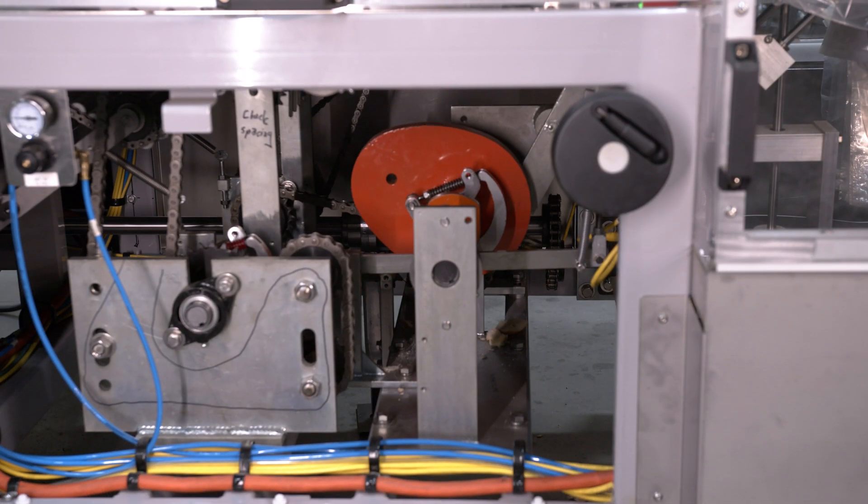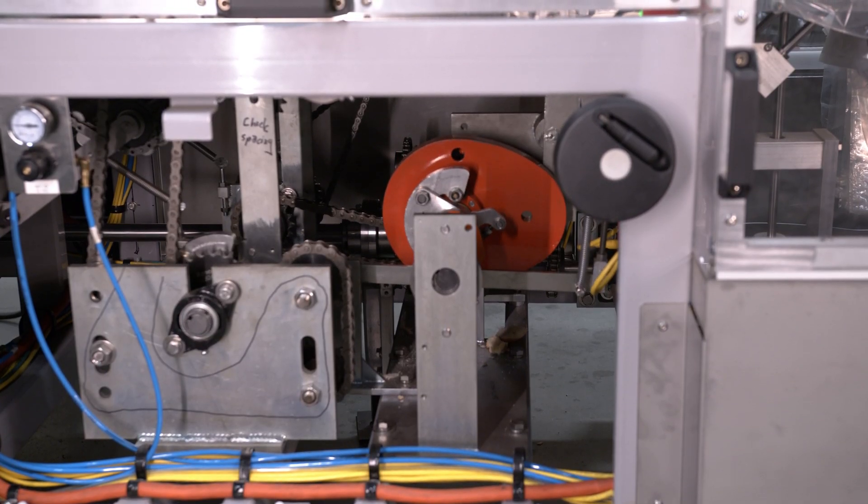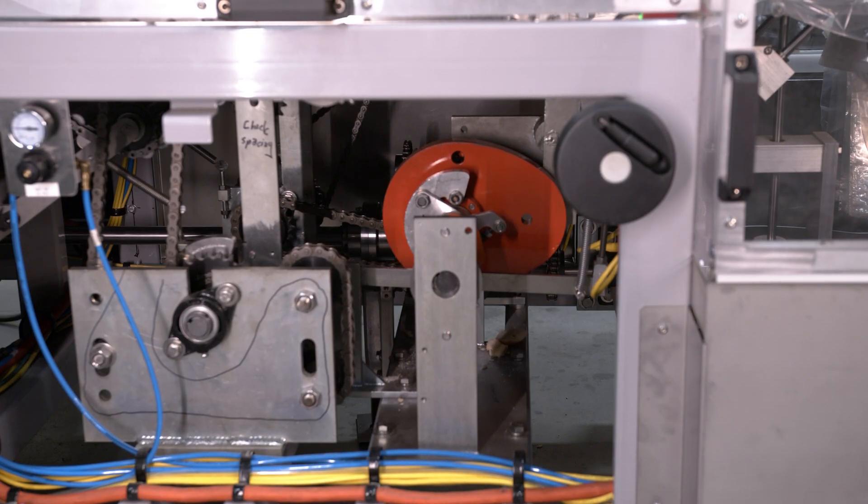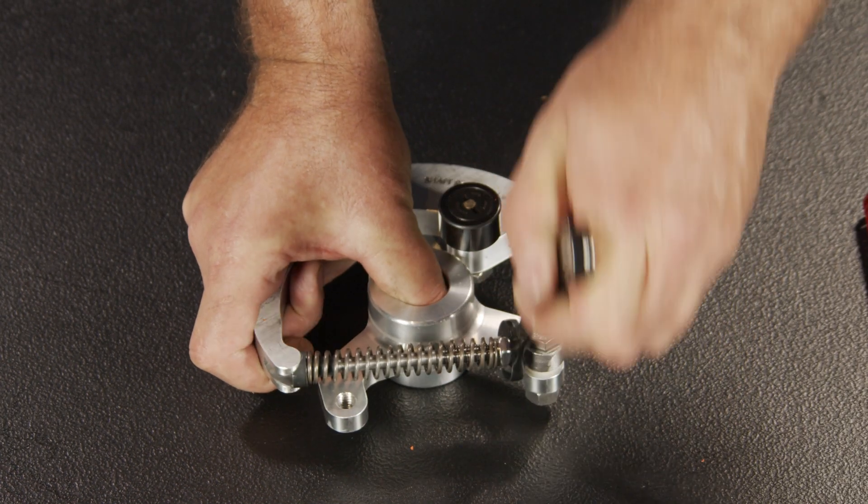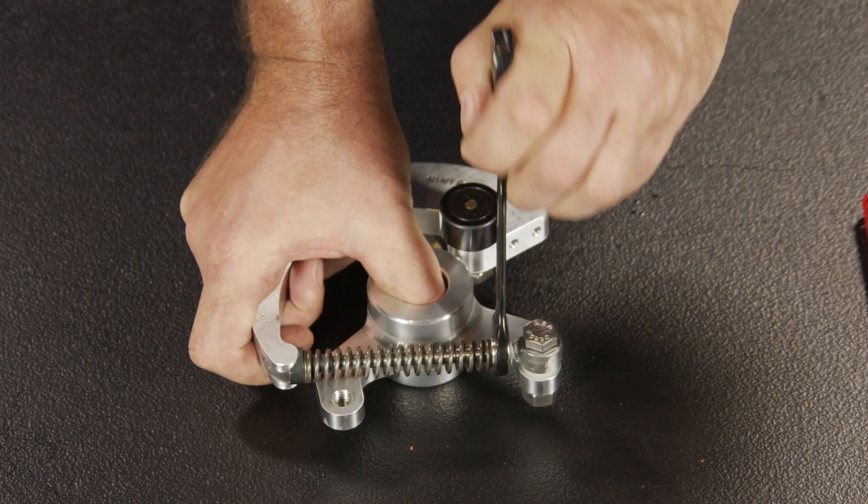To change the spring, the first thing is to jog the machine until the spring is in an open area where the clutch tool can access it. Using a half-inch wrench, back off the nut that provides tension on the spring so it is as weak as possible.